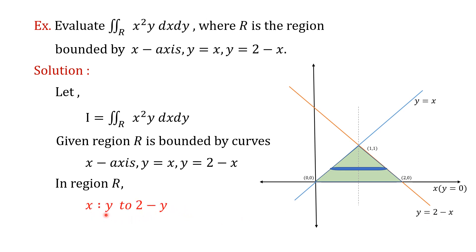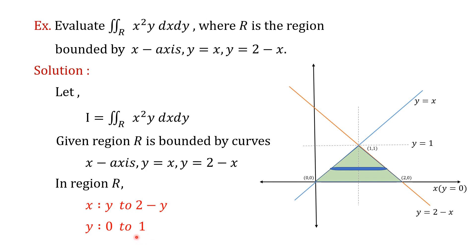To obtain the limits for y, we move the horizontal strip vertically along the y-axis from y equal to 0 up to the point (1, 1). The line through this point parallel to the x-axis is y equal to 1. Therefore, we move the horizontal strip from y equal to 0 to y equal to 1, giving lower limit 0 and upper limit 1. So y varies from 0 to 1.